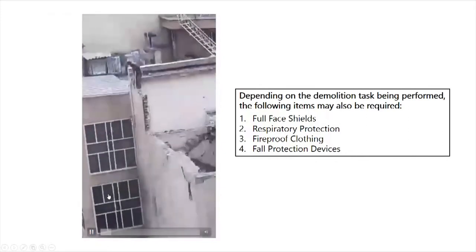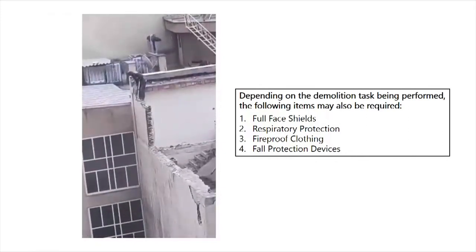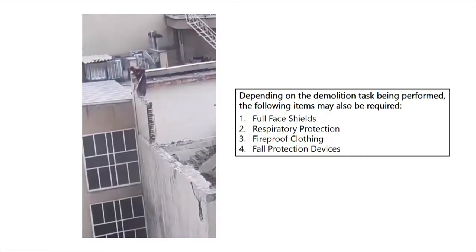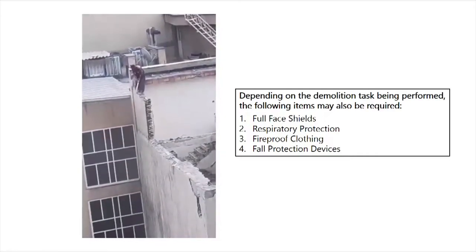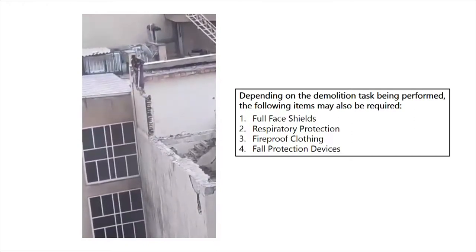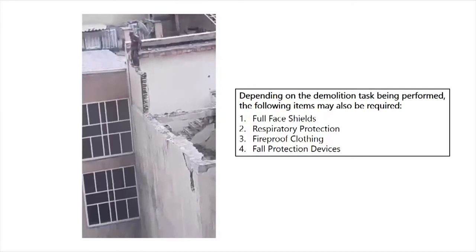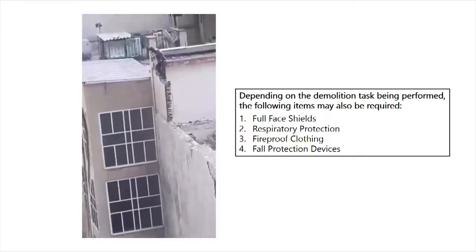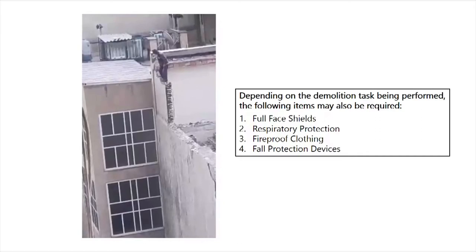In this video, the worker carries out the wall's demolition in the right way, but there is no regard for his own safety. It's like he is cutting the branch of the tree on which he is sitting. There is no scaffold or staging system to support him, and he is not using proper PPE, a fall protection system, or a personal fall arrest system. So this is not a good practice at all.